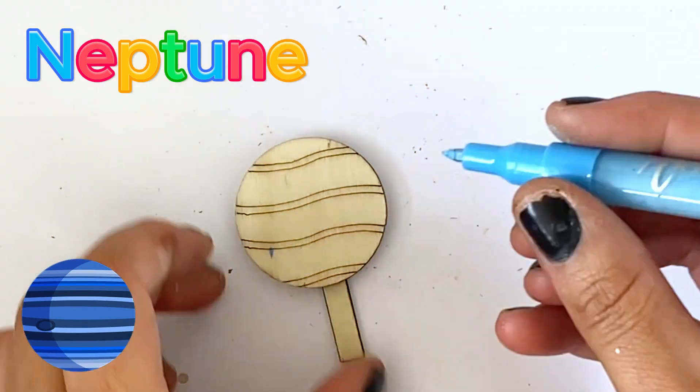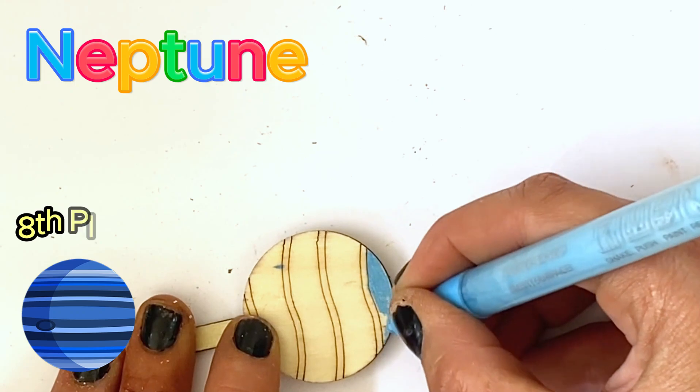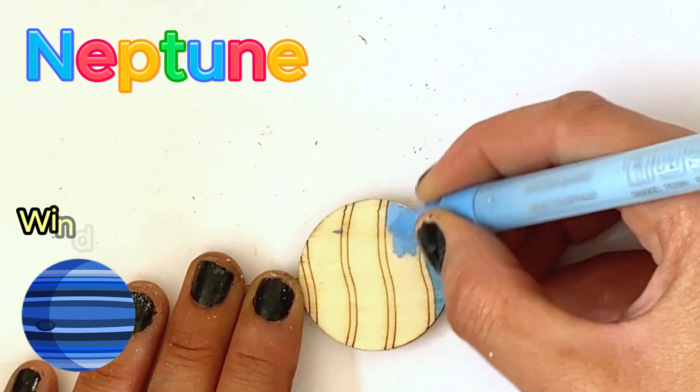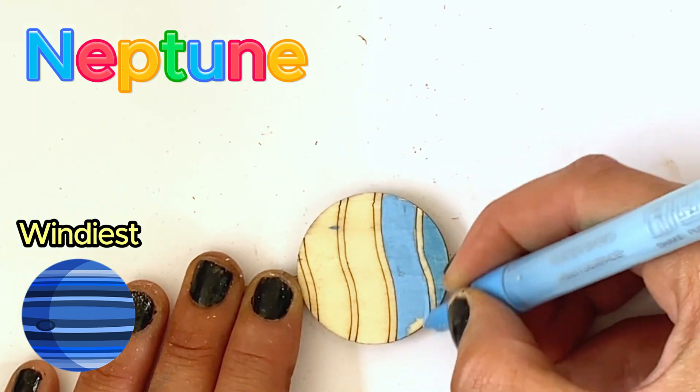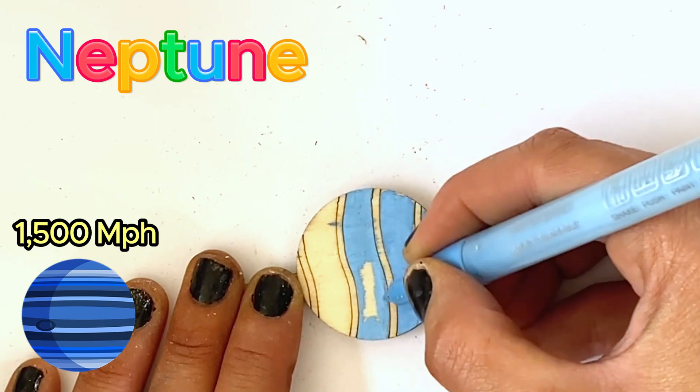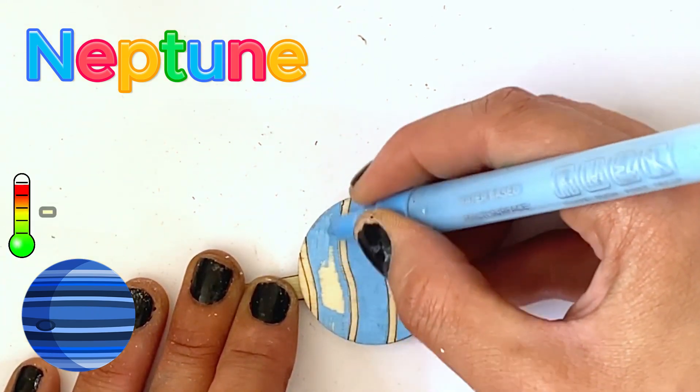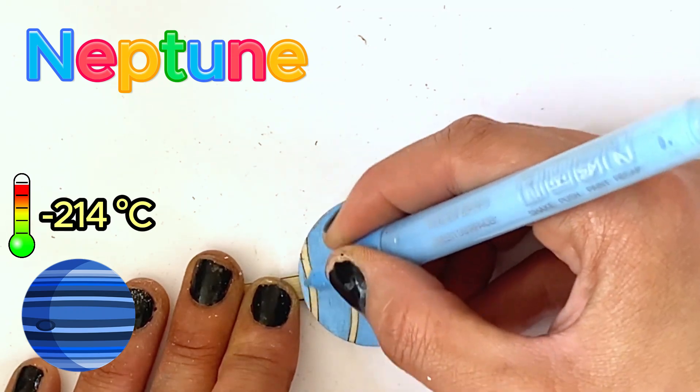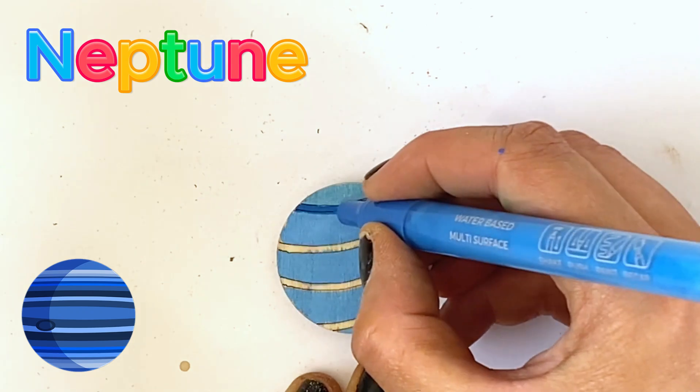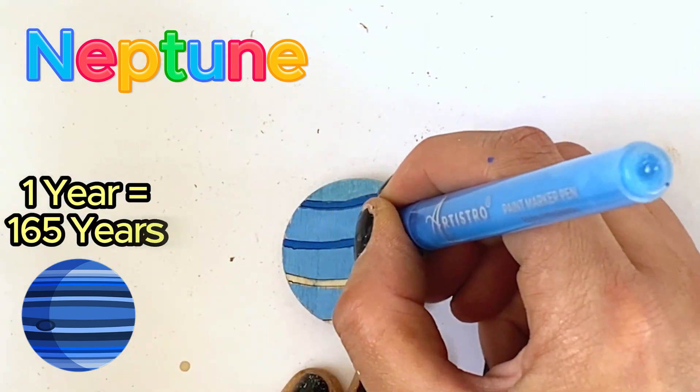The last planet we're painting is Neptune, because Neptune is the eighth and last official planet in our solar system. It is also the windiest planet with winds that can reach up to speeds of 1500 miles an hour. The temperature on Neptune is an average of minus 214 Celsius. And Neptune also takes roughly 165 Earth years to orbit the Sun one time.